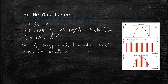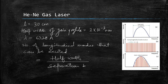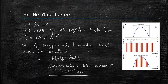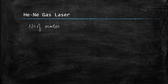The number of excited modes equals the half-width divided by the separation between modes. The half-width is given in wavelength units, so we convert it to frequency: Δν = c·Δλ/λ², where Δλ = 2 × 10⁻³ nm. The separation between modes is c/(2L), where L is the cavity length. Dividing, the c cancels out.